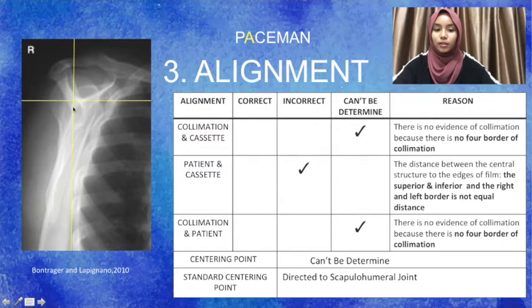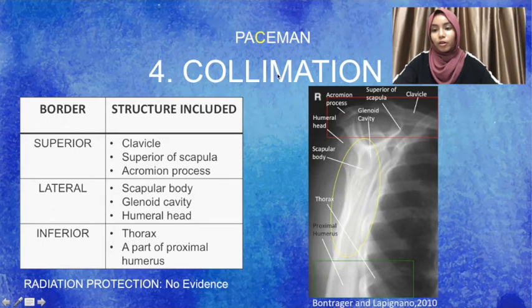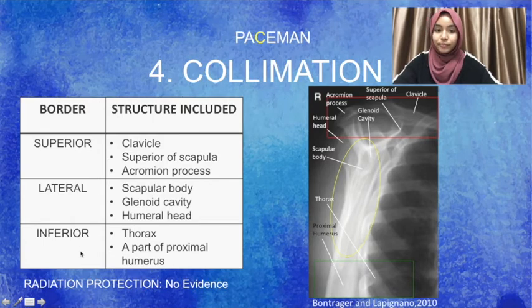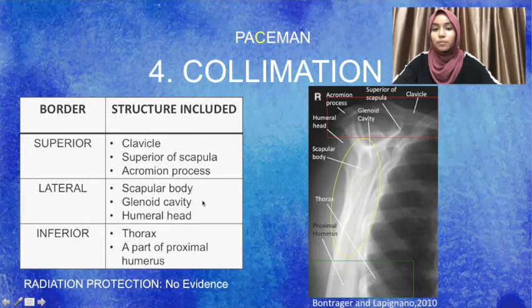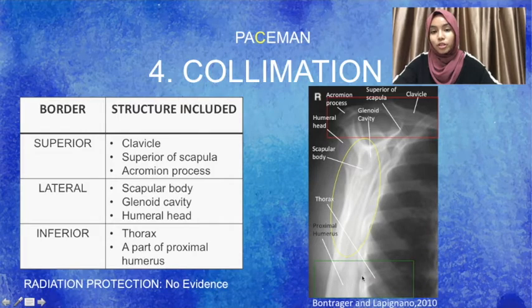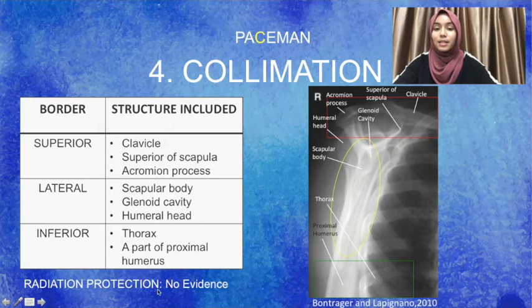Moving next, for collimation: the red box represents the superior border, the yellow represents the lateral border, and the green represents the inferior border. At the superior border, structures that should be included are the clavicle, the superior scapula angle, and the acromion process. For the lateral border, structures include the scapula body, glenoid cavity, and humeral head. For the inferior border, structures include part of the proximal humerus and the thorax. There is no evidence of radiation protection in this radiograph.